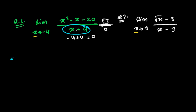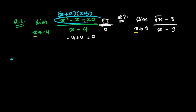Looking at the numerator, I noticed -20 and x², which tells me it's a quadratic equation. If it's quadratic, I can factorize it into two factors — something like (x + a)(x + b). While factorizing, I may get a factor of (x + 4), which is exactly what I need to cancel with the denominator. Since -20 has 4 as a factor, I'm confident this will work.